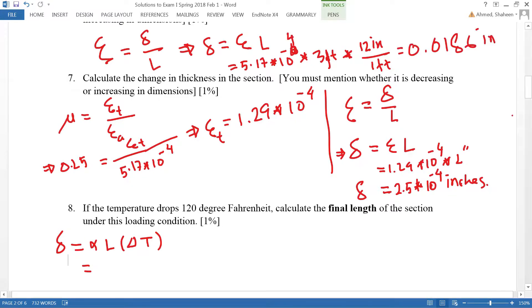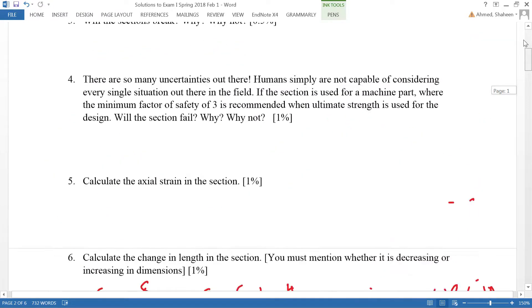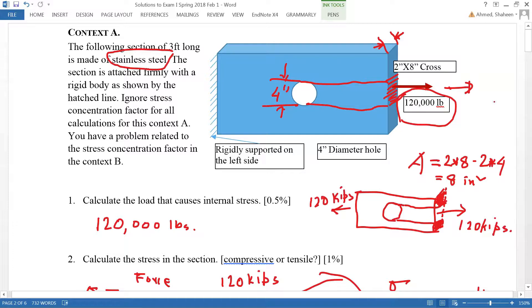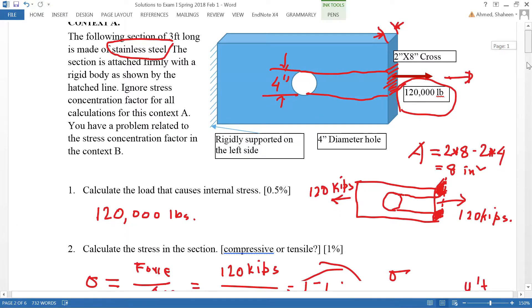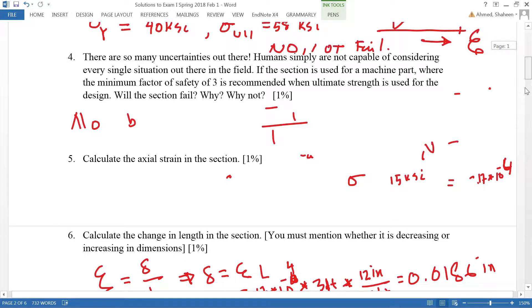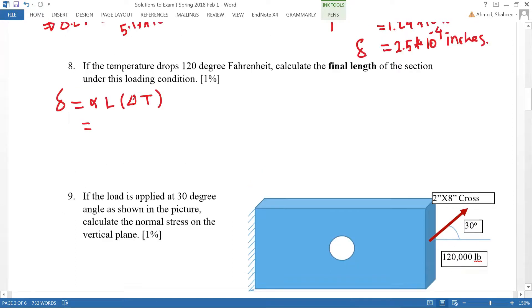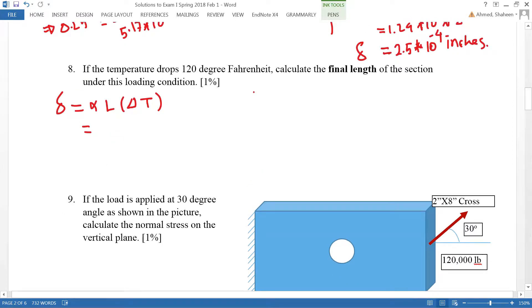We have a stainless steel bar and we're doing this calculation. You can see the same context, but this time the temperature drops 120 degrees Fahrenheit. For steel materials, the thermal coefficient is 6.5 times 10 to the power of minus 6 per degree Fahrenheit. You can get this number from the appendix.